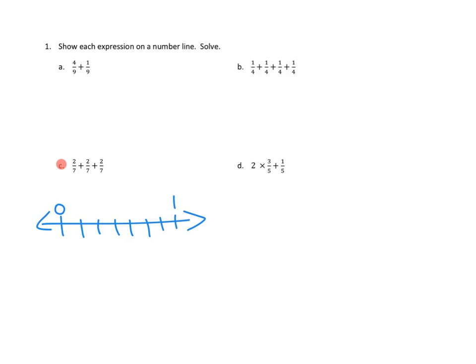And if those are 7s, then each of my hops is going to be over 2/7. So I'm going to go from here to here, right? And then I'm going to go 2 more, and then I'm going to go 2 more. And let's just see where I end up.